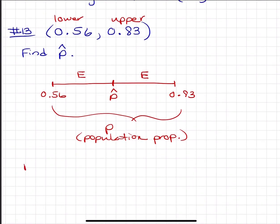So if you want to find P hat, what you're going to do is you're going to find the middle between the two endpoints, which is basically finding the average of the two endpoints.